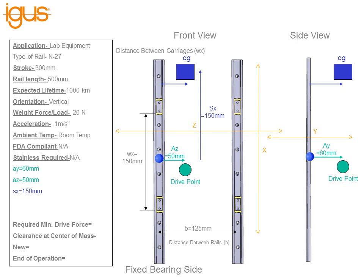The next dimension we want to look for is the SX. Start at the zero point and move to the center of gravity in the X direction — that number is 150 millimeters.